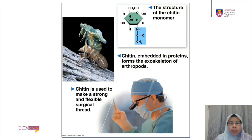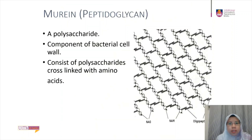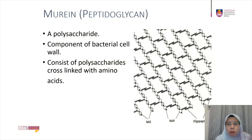Chitin is embedded in protein to form the exoskeleton of arthropods, and nowadays chitin is used to make strong and flexible surgical thread. The last polysaccharide to be discussed is murein, which is found in bacterial cell walls. Murein consists of polysaccharides cross-linked with amino acids.